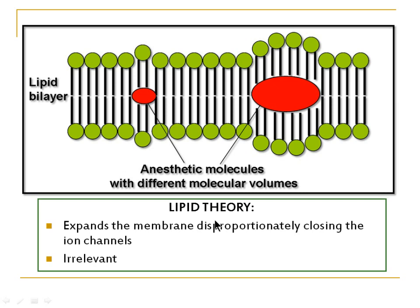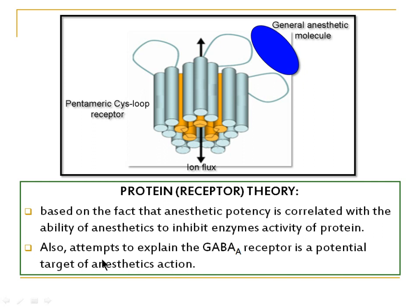According to this theory, general anaesthetics act by expanding the membrane disproportionately and closing ion channels. The anaesthetic rests between the lipid bilayers and expands the membrane. With this expansion, the ion channels in the bilayer plasma membrane are closed, so ion influx and efflux are prevented, resulting in hyperpolarization of the cell membrane and no action potential — leading to inexcitability of the cell. However, this theory is now considered irrelevant and disregarded.